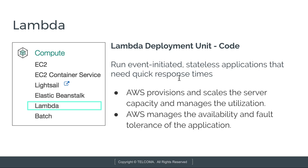Lambda's deployment unit is code. AWS provisions and scales the server capacity and manages the utilization. Lambda is used to run event-initiated stateless applications that need quick response time. AWS manages all the availability and fault tolerance of your application. Lambda is in the compute section of the AWS management console.